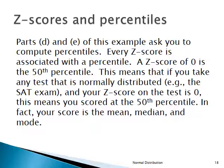Every Z-score is associated with a percentile. A Z-score of 0 is the 50th percentile. For example, if you took the SAT and got a Z-score of 0, you're at the 50th percentile — because for the normal distribution the mean, median, and mode are all the same. A percentile can be converted into a Z-score and vice versa, and we'll see how to do that using the Z-table.